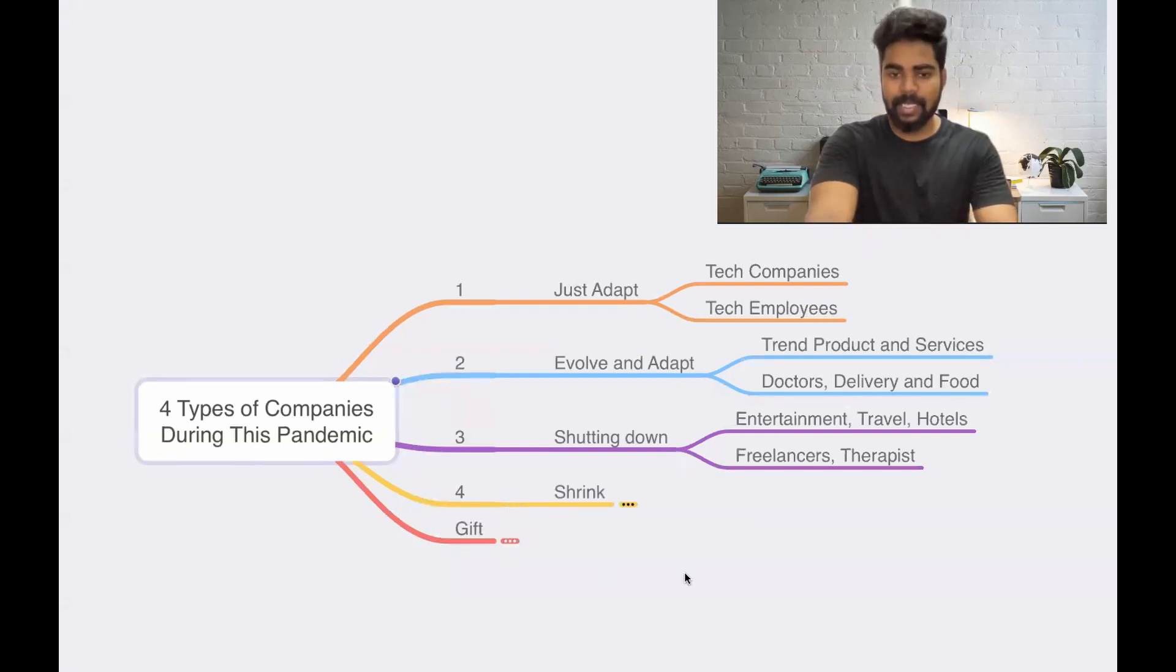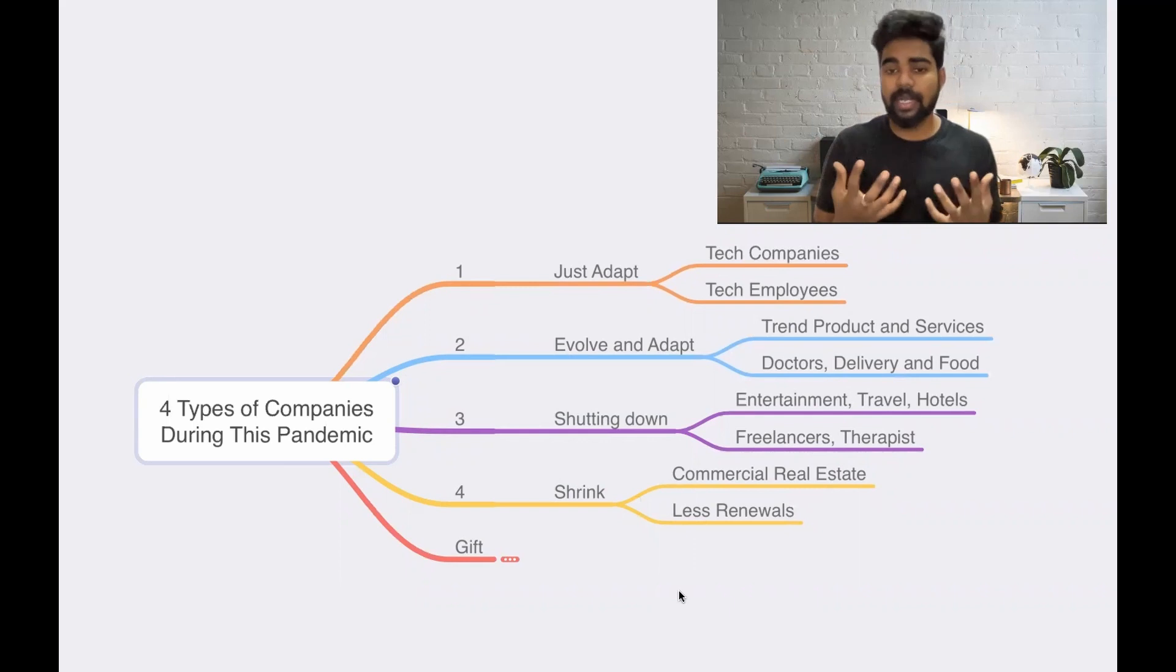Fourth type of company, they just shrink. It's not about shutting down, but they cannot expand their business. They will get shrink. So what are all those companies is basically commercial real estate.